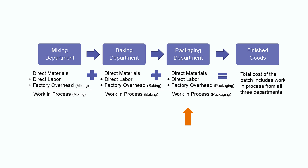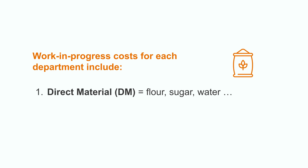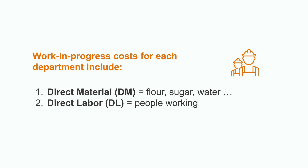Let's start with the cost of the mixing department. It has direct materials, which is the flour, sugar, water, etc. The direct labor, which is the people working in the mixing department. And finally, manufacturing overhead, like the rent, utilities, etc. for the mixing department. The baking and the packaging departments will also incur the same kind of costs during the process of making the bread.